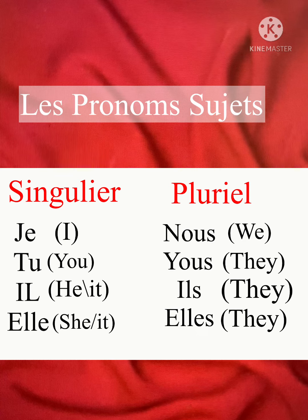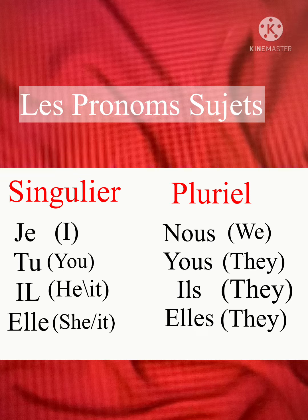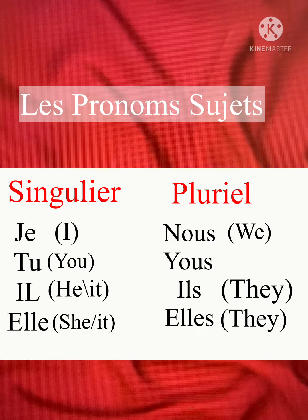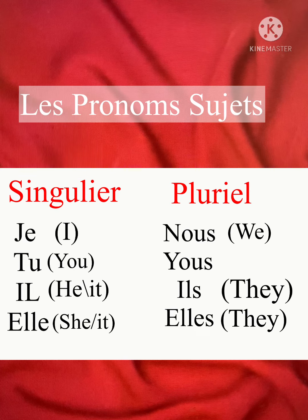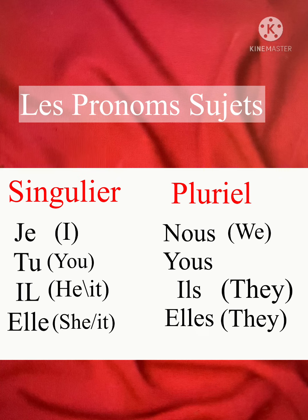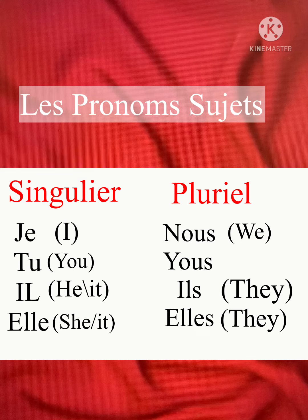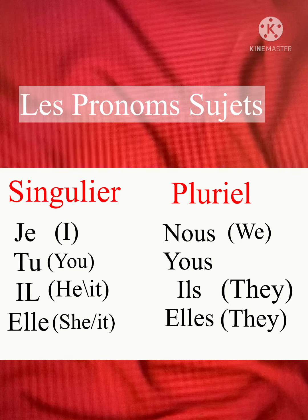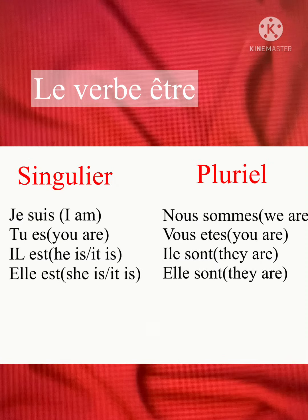'he' or 'it', 'elle' means 'she' or 'it'. In the plural: 'nous' means 'we', 'vous' means 'you', 'ils' means 'they' — masculine — and 'elles' also means 'they' — feminine. It's different for masculine and feminine, singular and plural.